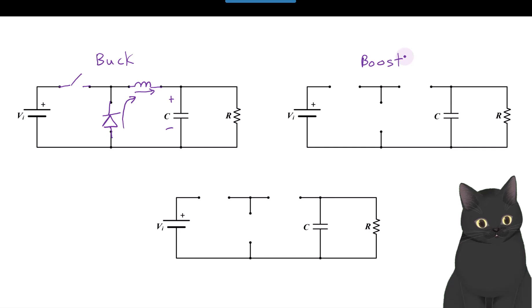Boost converter. So this one, we can memorize that the inductor is at the input. Just memorize these locations. And then we know the current is going to be going in because power is going to be going into our converter here.